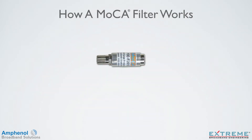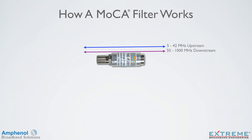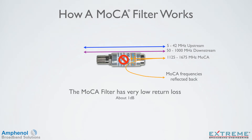Let's look at how a MoCA filter works. MoCA filters pass standard cable TV frequencies with about 1 dB of loss. They block the MoCA frequencies from 1125 to 1675 MHz and reflect the MoCA signal back into the MoCA network, due to the very low return loss of the filter of about 1 dB. A small amount of the MoCA signal will pass through the filter, but is attenuated by more than 40 dB.